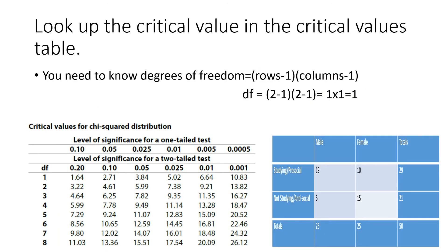Now look up the critical value in the critical values table. In order to do this you need to know degrees of freedom, which is worked out by rows minus 1 times columns minus 1. There are two rows of data because we have males and females, and two columns because we have studying versus not studying. So the degrees of freedom is 2 minus 1 times 2 minus 1, which is 1 times 1, which equals 1.